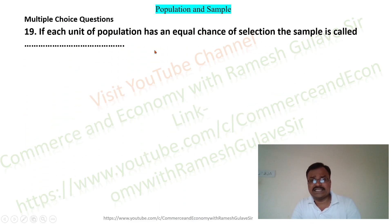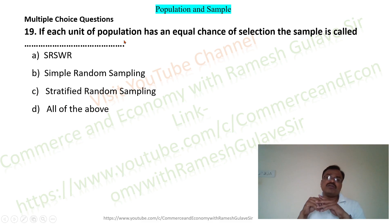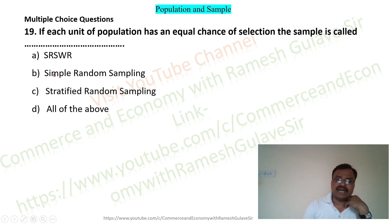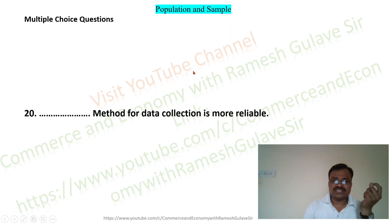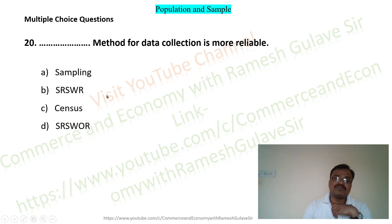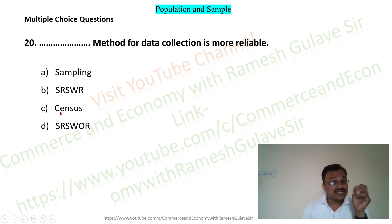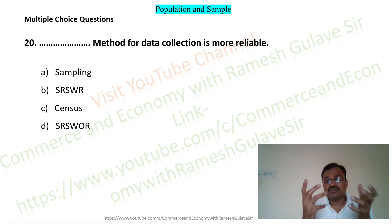The next question says: if each unit of population has an equal chance of selection, the sample is called dash. If every unit has an equal chance, it is simple random sampling, so option B is the right answer. The next question asks: dash method for data collection is more reliable. The options include: sampling, simple random sampling with replacement, census, and simple random sampling without replacement.